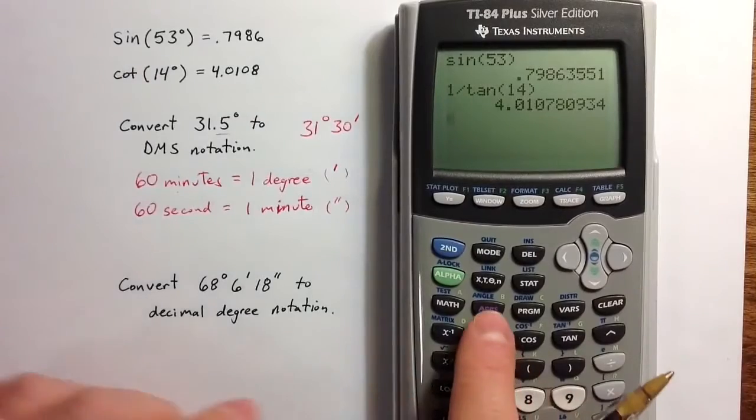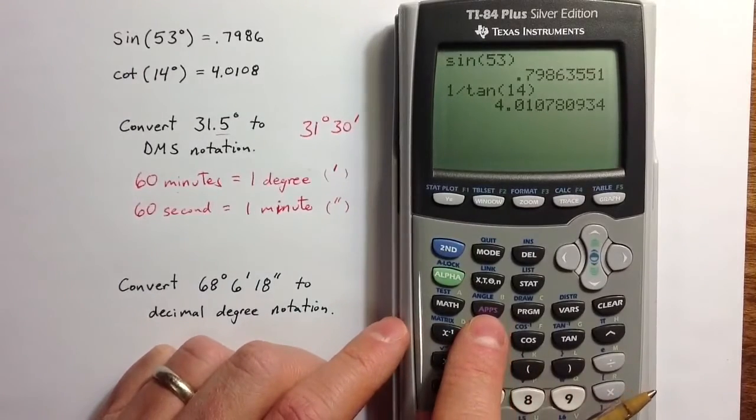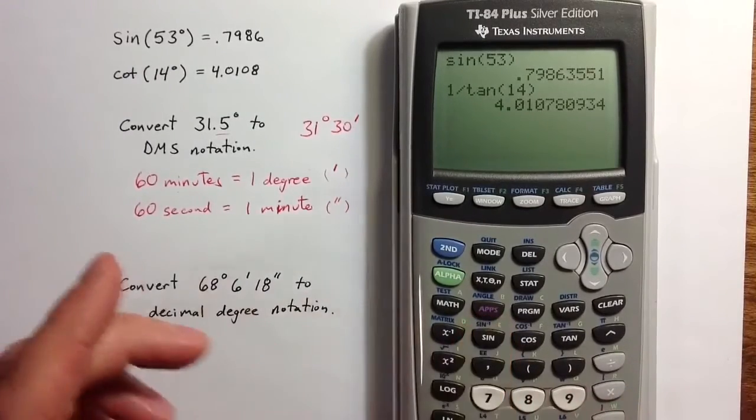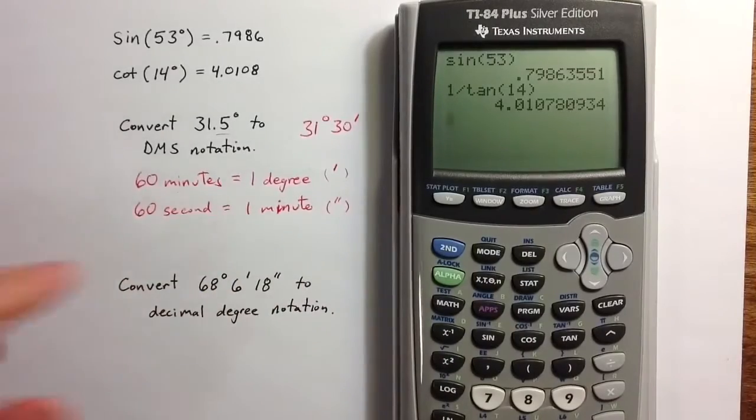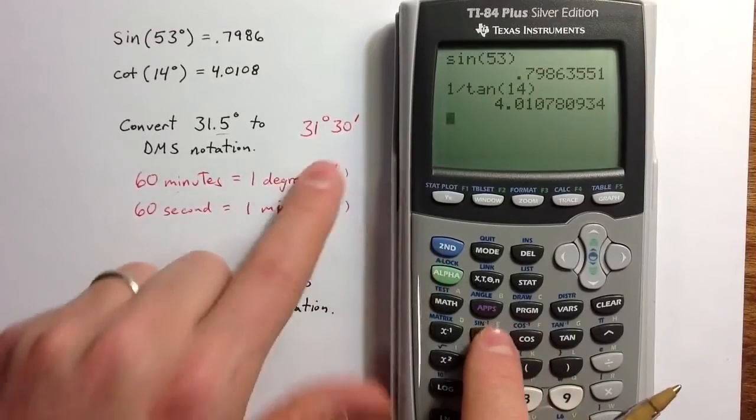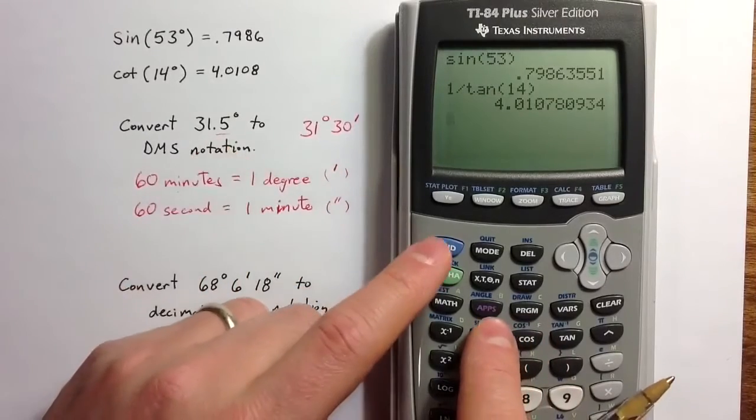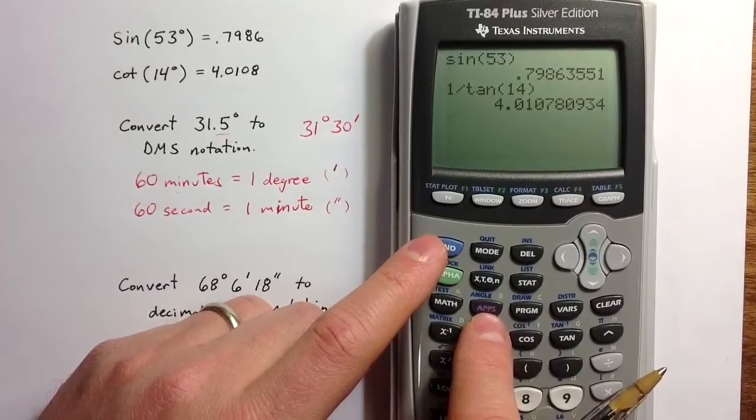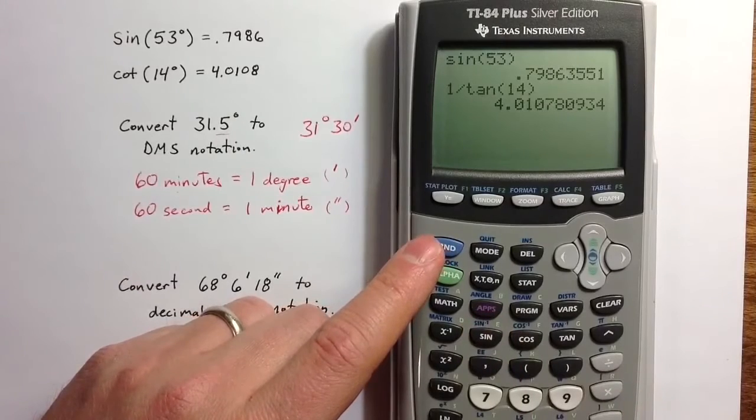The calculator's angle menu can help us calculate that, and if there's a more complicated number, it would help us calculate that. What I would want to do is type in 31.5, and then go to the angle menu using the second command,